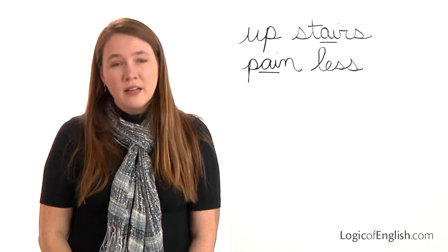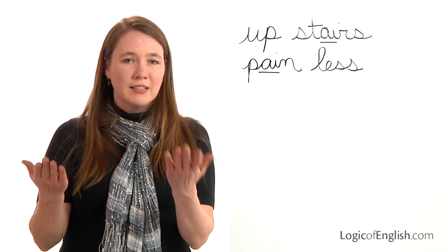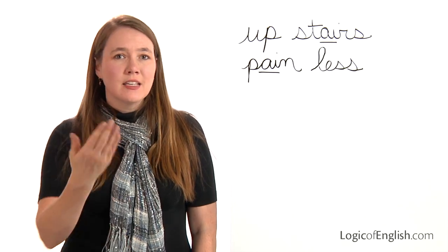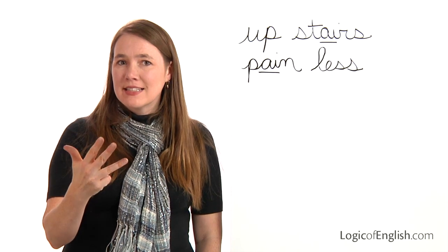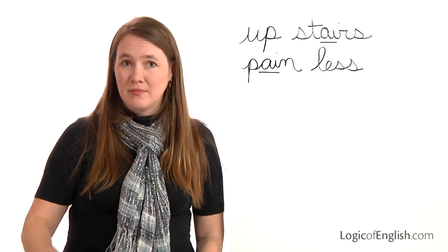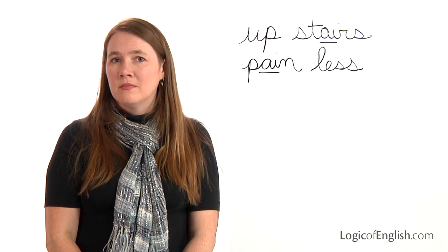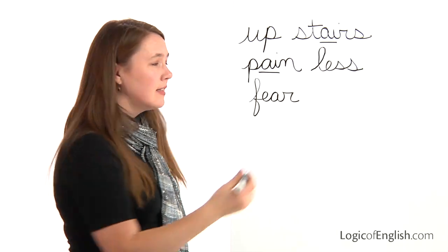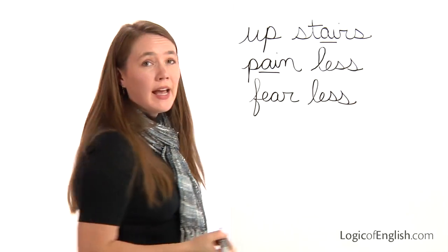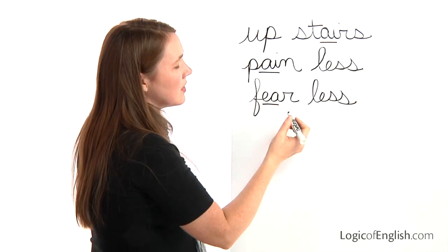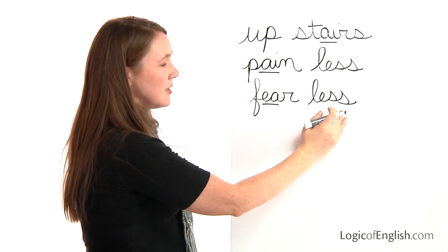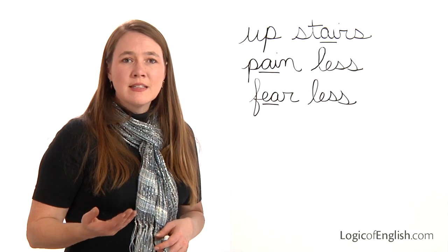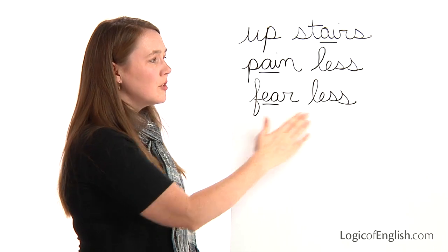The next word is 'fearless.' Mason is fearless. Two syllables: first is 'fear' — F, ea, r; second is 'less' — L, e, s, s. Help me write it: F, ea, r — L, e, s, s. We'll underline the ea. Once again, double S at the end — we often double F, L, S after a single vowel. The root word is 'fear,' and someone who is fearless is someone without fear.